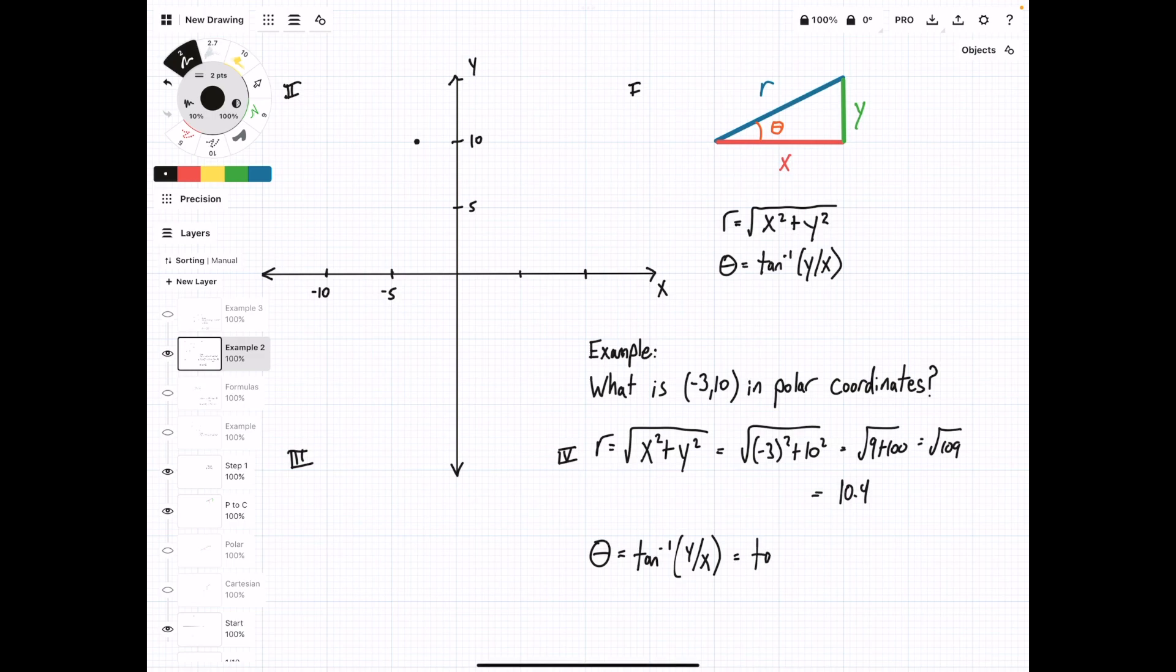Down here, we're going to do tan inverse of 10 over negative 3, and this comes out to be negative 73.3 degrees. So in this case, if we actually drew that out, that angle would be somewhere down here, because it's negative.